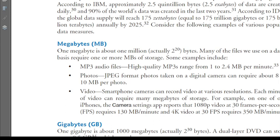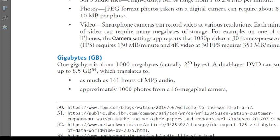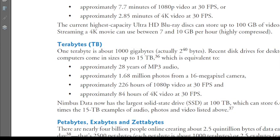If we talk about gigabytes — GB — one gigabyte is about one thousand megabytes, actually 2 to the power of 30 bytes. A dual-layer DVD can store up to 8.5 GB, which translates to about 141 hours of MP3 audio, approximately 1,000 photos from a 16-megapixel camera, and approximately 7.7 minutes of 1080p video at 30 FPS.